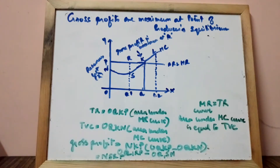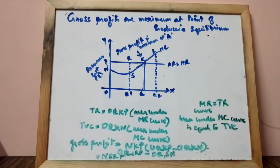Hello. This video explains gross profits or maximum at point of producer's equilibrium. We have seen the MR-MC approach and TR-TC approach. According to the MR-MC approach, producer's equilibrium refers to that output level at which MR is equal to MC and the MC curve cuts the MR curve from below.